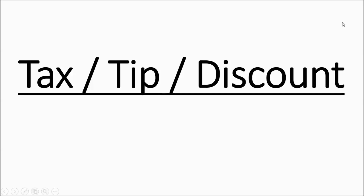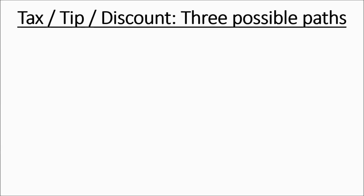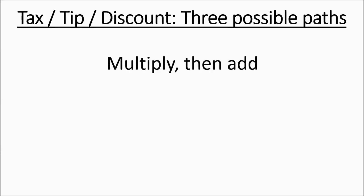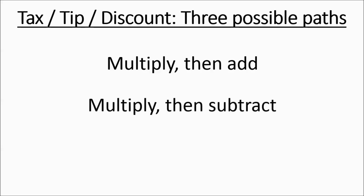This video is going to cover how to find tax, tip, and discount, as well as total cost and sale price. There are three possible ways you can do this: you can multiply then add, you can multiply then subtract, or you can just multiply. We're going to go into more detail in a minute, but there's one of these three choices you can do for each of these problems.